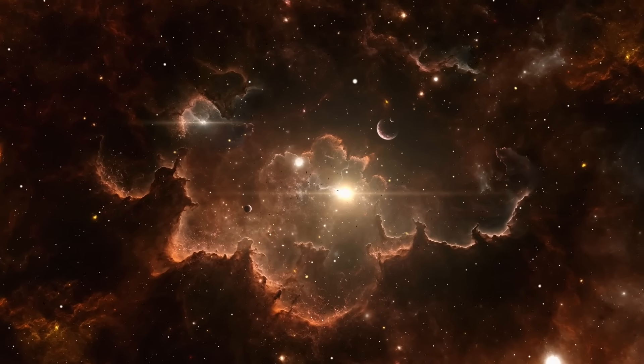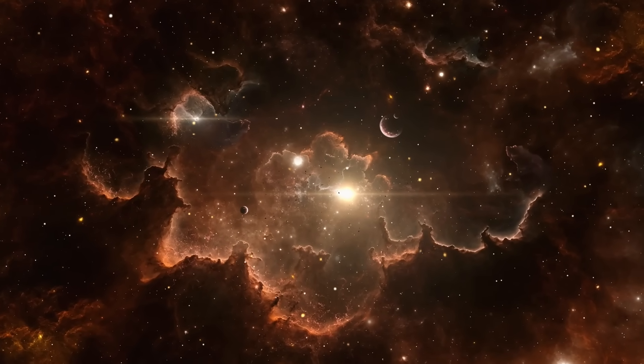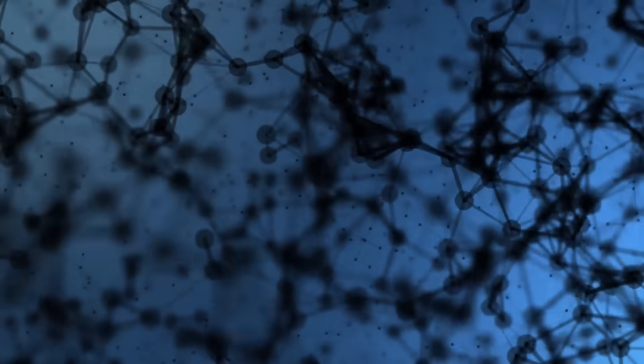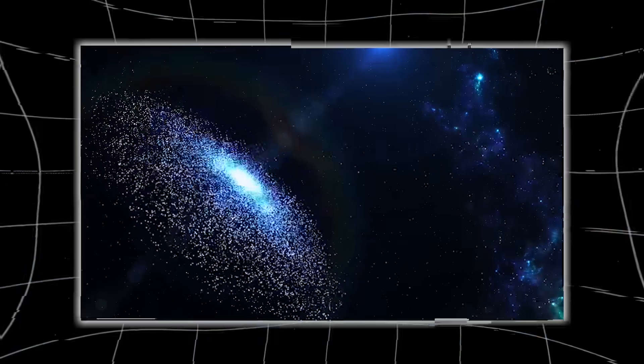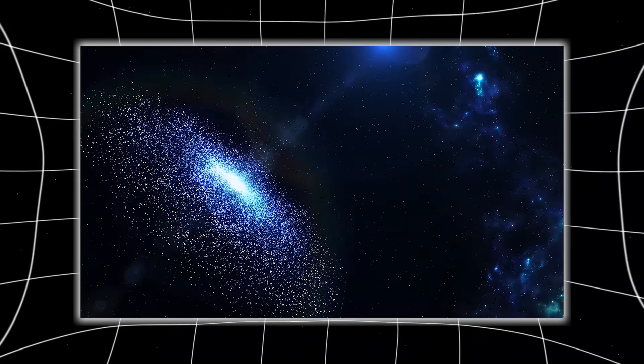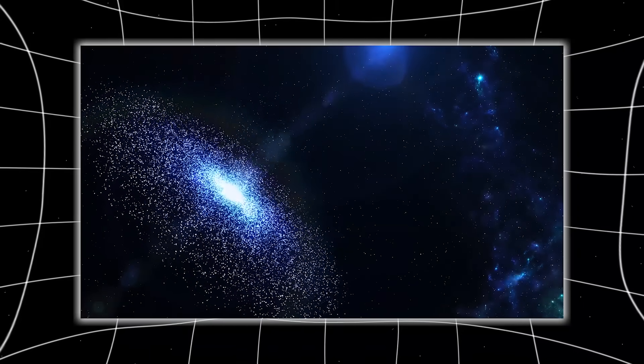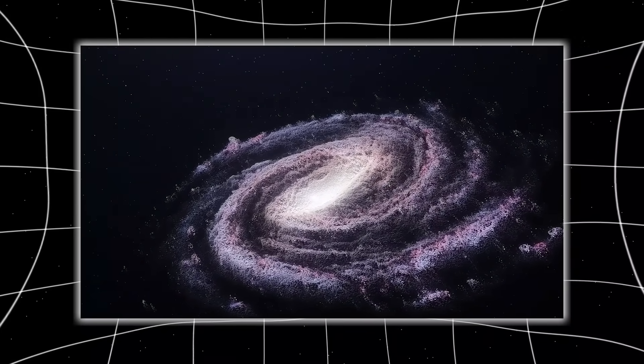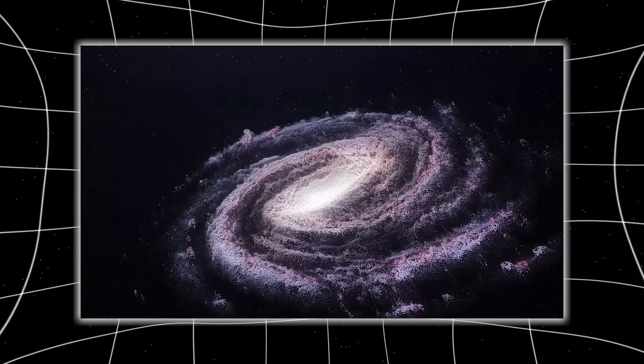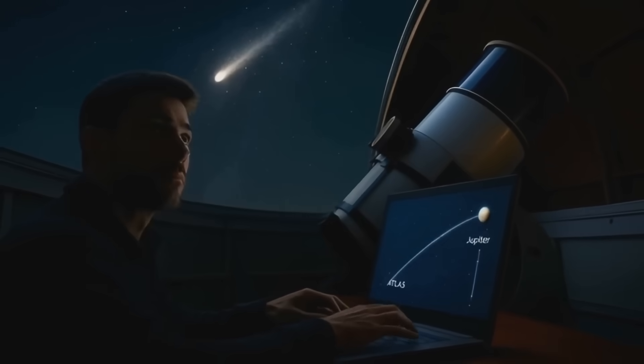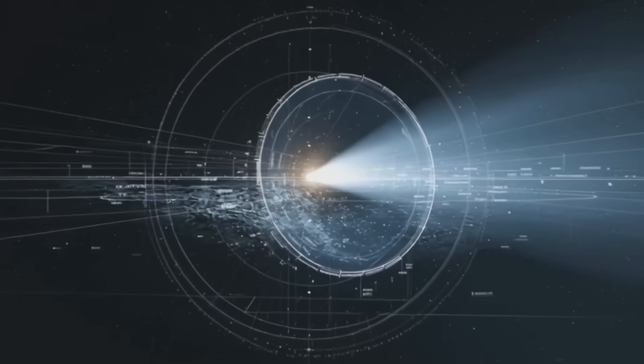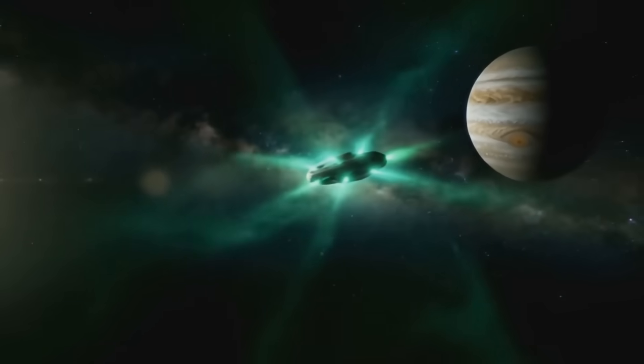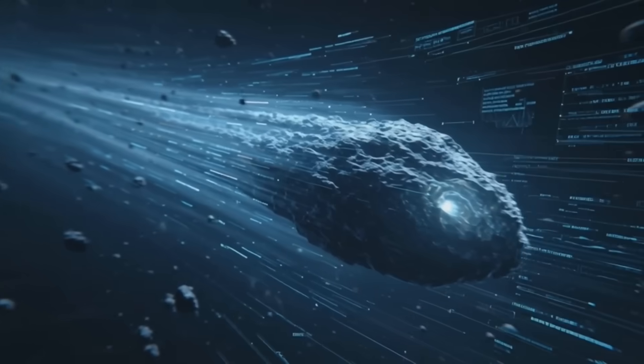This red to blue jump isn't just pretty, it indicates a unique chemical composition, possibly containing materials rarely seen in solar system comets. When an object comes from another star system, its chemistry carries fingerprints of the disk of gas and dust that once surrounded its parent sun. A shift this dramatic suggests 3i Atlas isn't just interstellar by trajectory, it's interstellar by molecular identity. The press conference barely mentioned this, but Ray's analysis shows it should have been the headline.